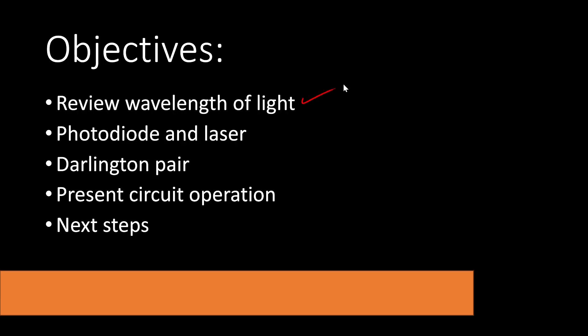We'll start by exploring the wavelength of light. Briefly, we'll look at the photodiode operation and the laser. We'll present a circuit showing the Darlington pair. We'll show the circuit in operation, and then we'll explore some of the next steps that you might like to take to learn more about electronics.